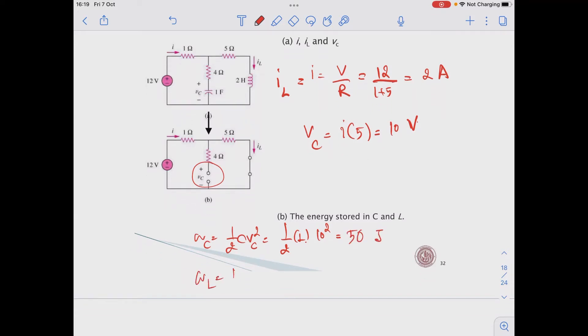And WL is equal to 1 over 2 L IL squared. So we have L 2 henry, and IL is 2. So here we have 4 joules.